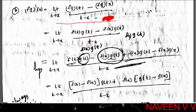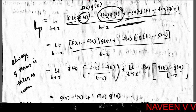We subtract and add f(x)·g(t) in the numerator: limit t→x of [f(t)·g(t) - f(x)·g(t) + f(x)·g(t) - f(x)·g(x)] / (t - x). Combining the first two terms with g(t) and the last two terms with f(x), this equals limit t→x of [(f(t) - f(x))·g(t) + f(x)·(g(t) - g(x))] / (t - x).